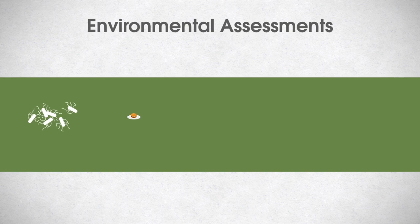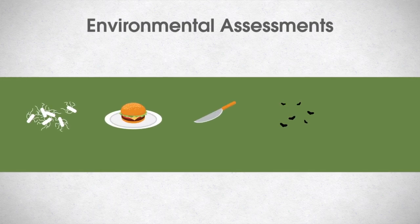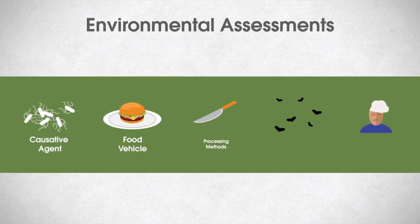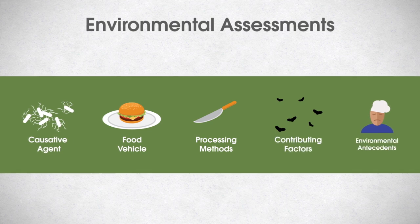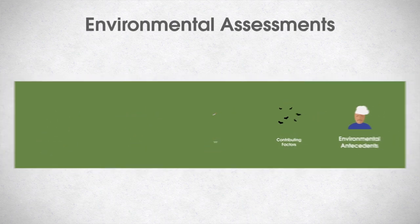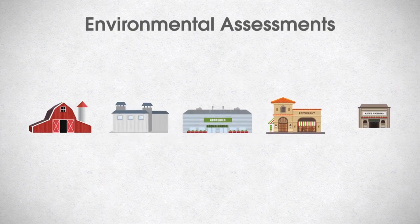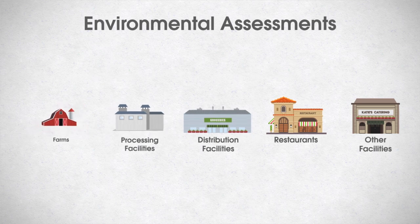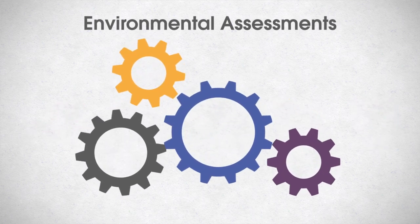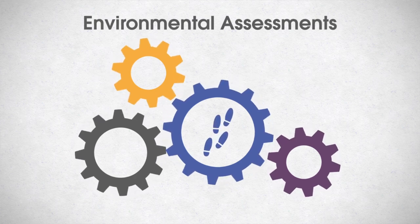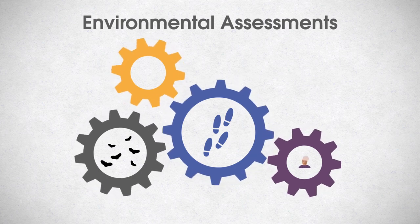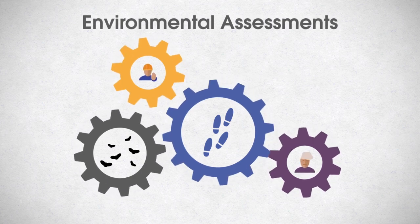Environmental assessments focus on past processes and procedures that may have contributed to a specific outbreak. They attempt to identify how the causative agent, food vehicle, processing methods, contributing factors, and environmental antecedents made people ill. Environmental assessments should be conducted throughout the food production system, including farms, processing facilities, distribution facilities, restaurants, and other facilities that serve, prepare, or package food. The four major objectives include reconstructing past events that focus on implicated foods, identifying contributing factors, identifying environmental antecedents, and developing effective interventions.